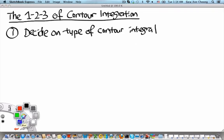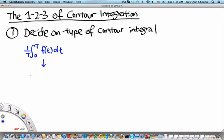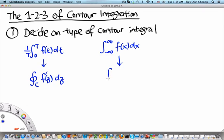We are guided by the fact that if it is an average — say, (1/T) times the integral from 0 to T of some f(t), which is periodic, dt — we convert it into a closed contour integral of f(z) dz. Whereas if we encounter a function where we have to integrate from minus infinity to infinity, we convert it into a closed contour integral of f(z) dz, where f(z) is simply f(x) with x replaced by z.